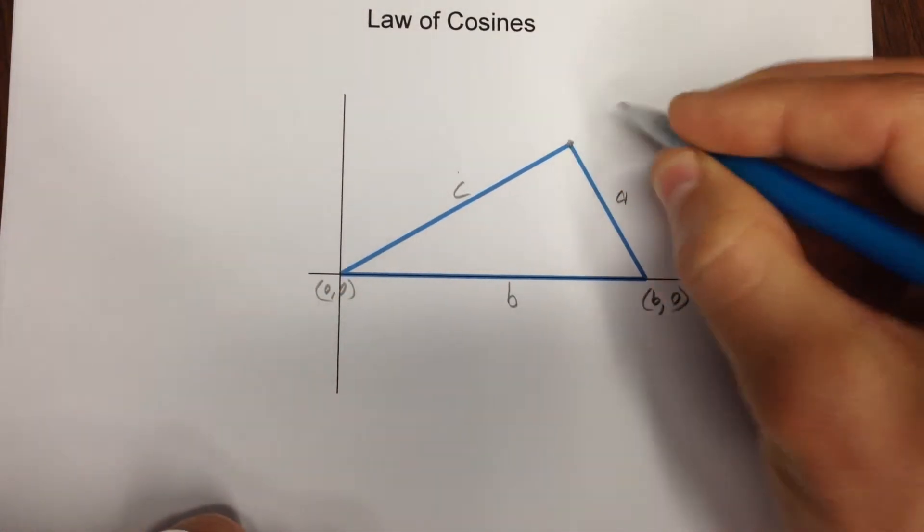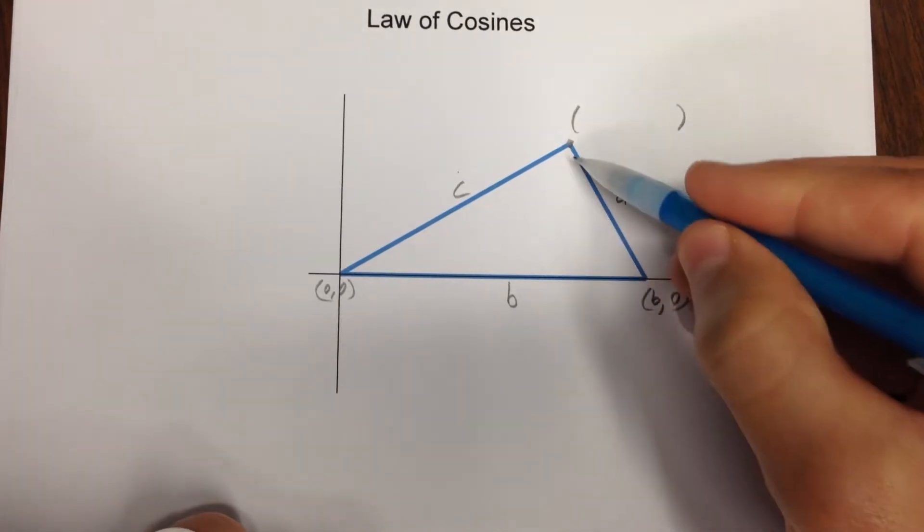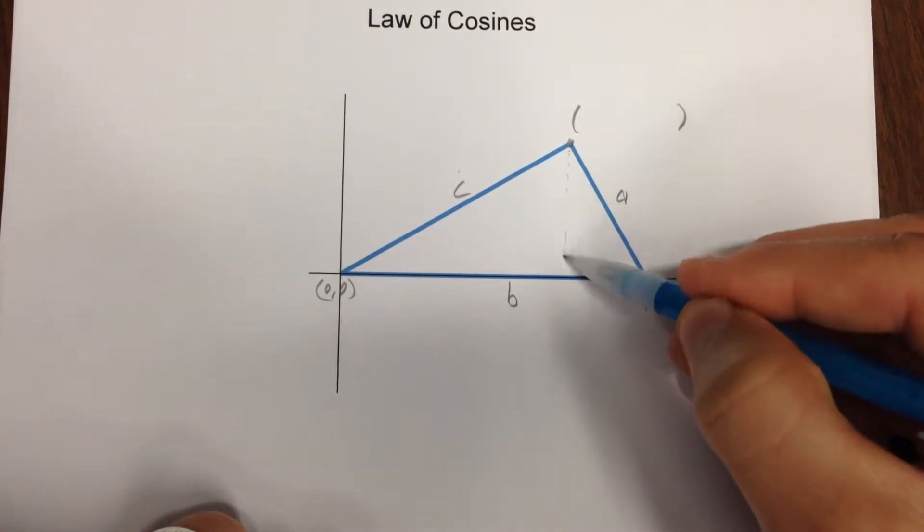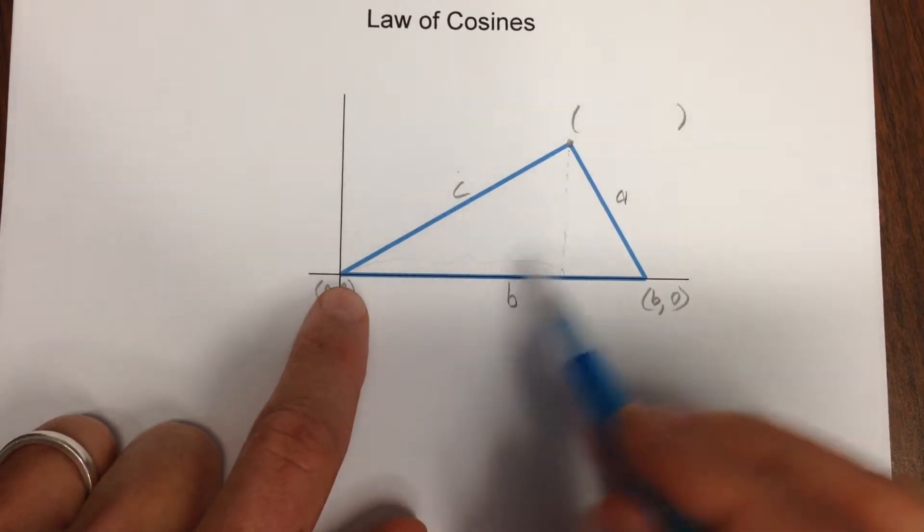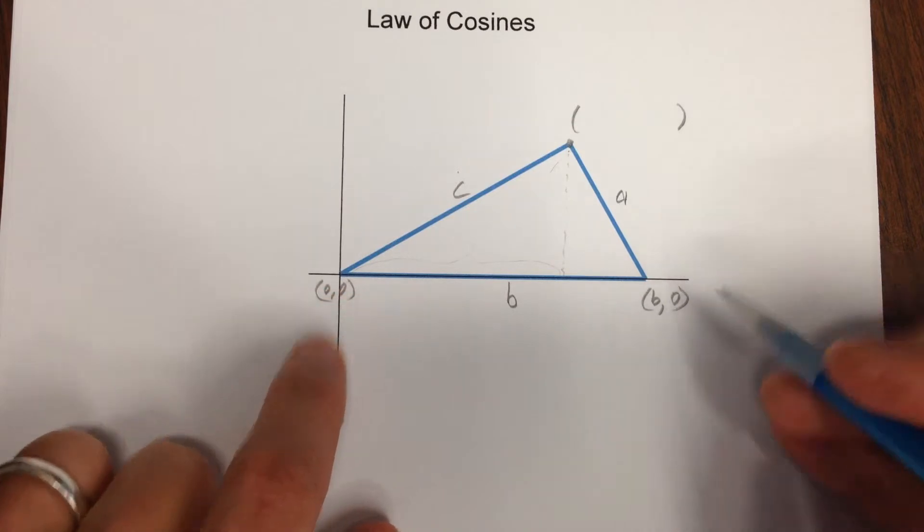Then I still have one point that I have to do a little bit of work on. I need to know this side of that triangle and this side, those are the coordinates here.